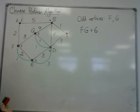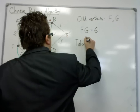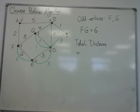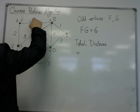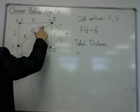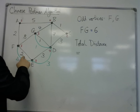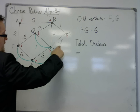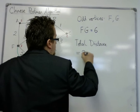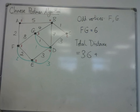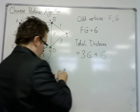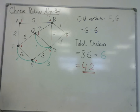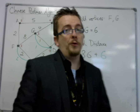The total distance that would have to be travelled is all of the edges added together: 5 and 7 is 15, 19, 21, 22, 29, 30, 33, 36, plus the ones we added on, plus the 6. So the actual distance is 42. The shortest distance in this case to travel is 42.